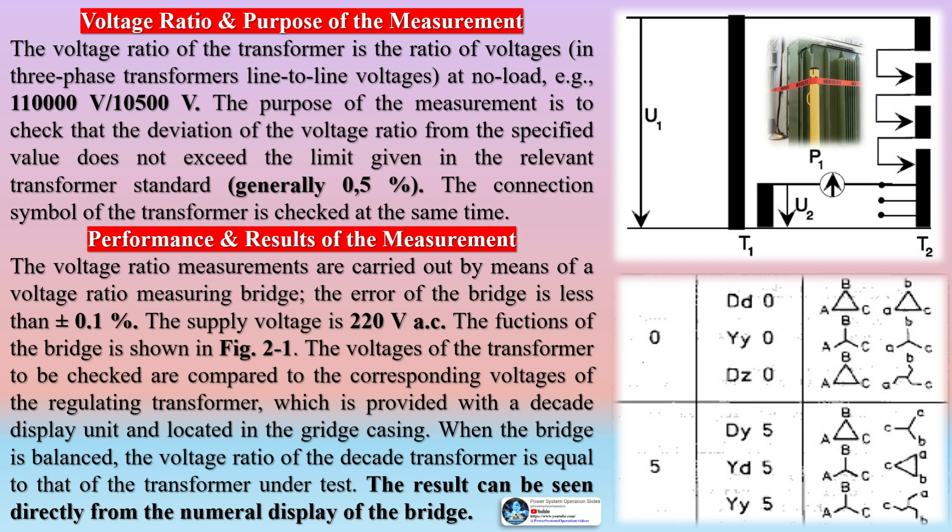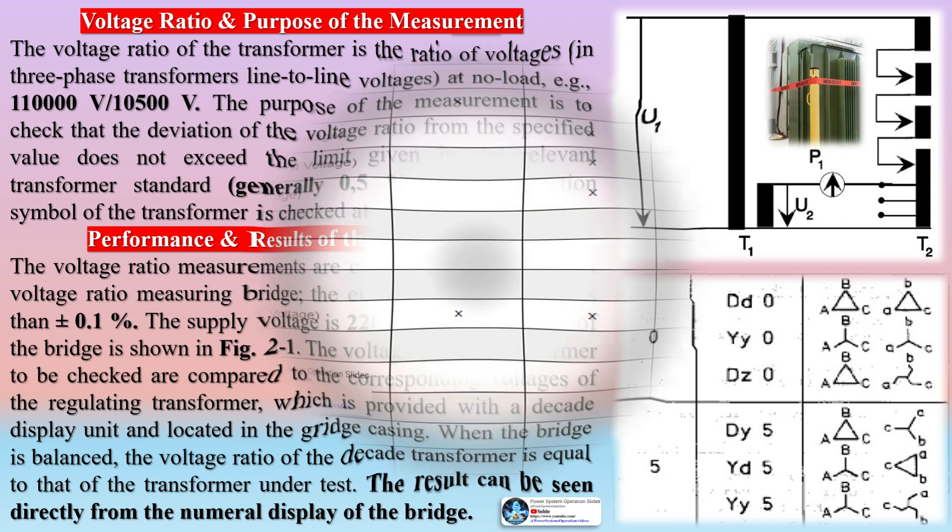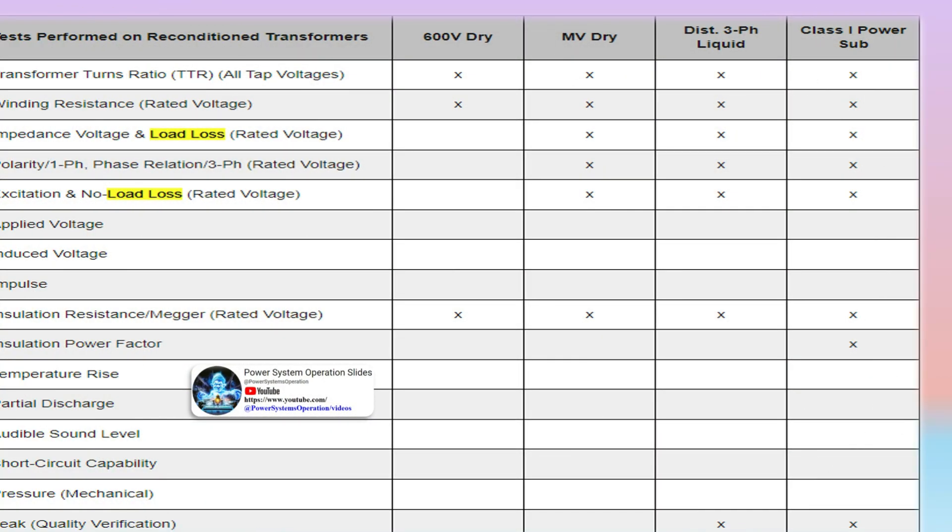Voltage Ratio and Purpose of the Measurement. The voltage ratio of the transformer is the ratio of voltages in three-phase transformers line-to-line voltages at no load, for example, 110,000 V by 10,500 V. The purpose of the measurement is to check that the deviation of the voltage ratio from the specified value does not exceed the limit given in the relevant transformer standard, generally 0.5%. The connection symbol of the transformer is checked at the same time.